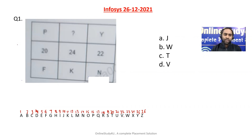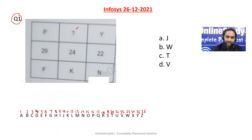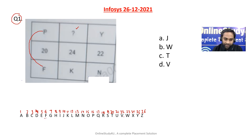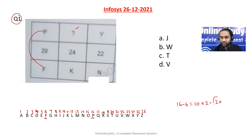Now question number one: we have P and we need to find the value. The series is Y, 20, 24, 22, F, K, N. If you see the difference between P and F in terms of position — F is at position 6 and P is at position 16 — so 16 minus 6 is 10, and if you multiply by 2 you get 20. That's how 20 is written here.